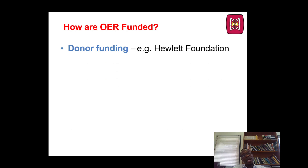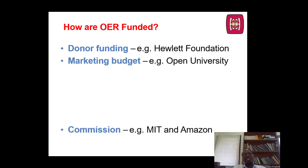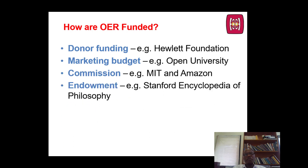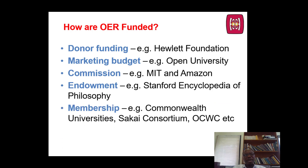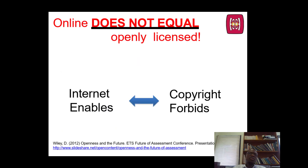But how are they funded? We have donor funding, marketing budgets, and commissions that have put money aside for funding OER. We also have endowments, just like we have memberships — if you belong to the Association of Commonwealth Universities, you'll be able to access some of these gratis. And then we have governments that put aside budgetary allocations or funding to support open educational resources. I should mention that online does not equal openly licensed.